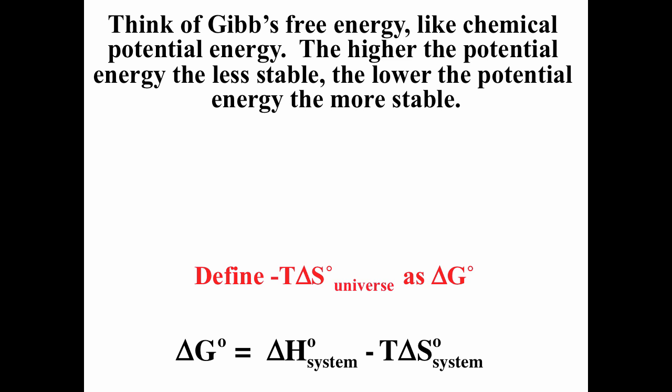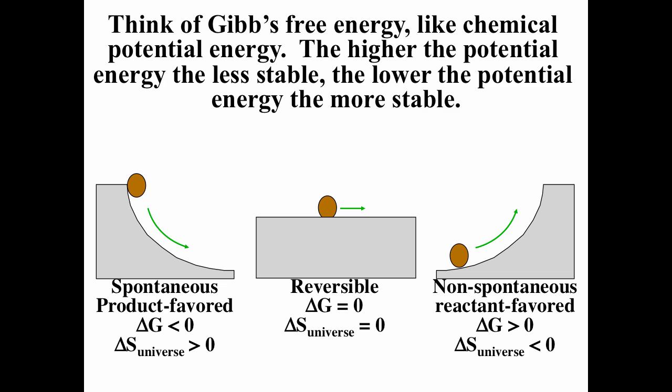We can think about Gibbs free energy like chemical potential energy. The higher the chemical potential energy, the less stable; the lower the potential energy, the more stable. If delta G is less than zero — remember delta G is minus T times delta S of the universe — that means delta S of the universe would be positive, which is a spontaneous process, like a boulder rolling down a hill. In terms of a reaction, we say that is product-favored. If delta G is positive, that corresponds to delta S of the universe being negative — a non-spontaneous, reactant-favored process. If delta G is zero, the products and reactants have the same potential energy and the process is reversible.